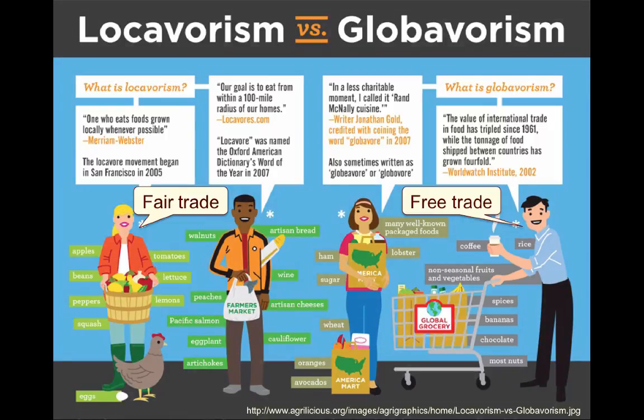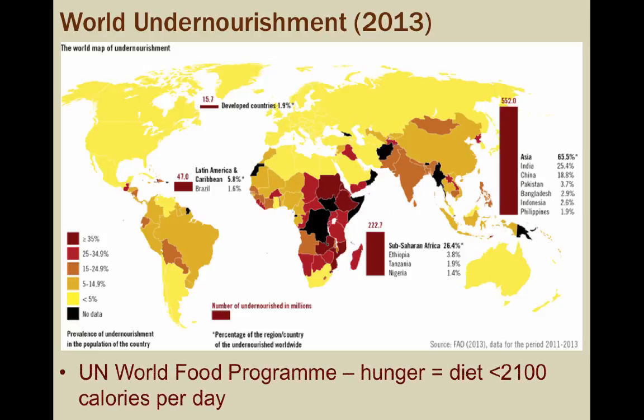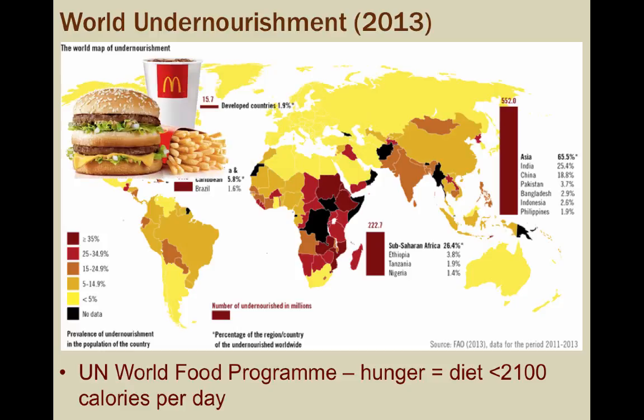Due to the effects of the Green Revolution, the world produces more than enough food to feed every living person. However, malnourishment and hunger persists. The United Nations World Food Program defines hunger as possessing a diet of less than 2,100 calories per day. Presently, around one-seventh of the world's population is undernourished. For some perspective, a Big Mac Extra Value meal with fries and a Coke totals just under 1,000 calories. While developed countries are certainly food-rich, they still contain impoverished populations where people do not have access to adequate food.